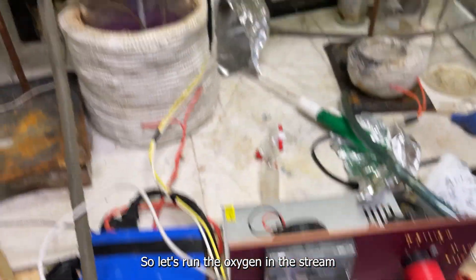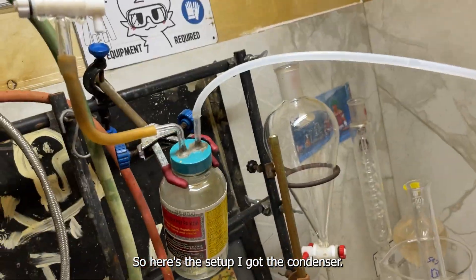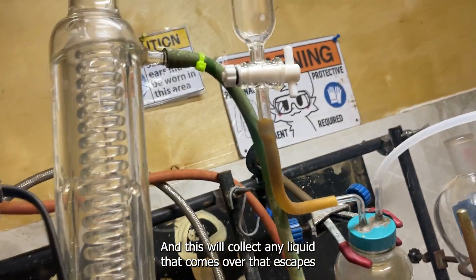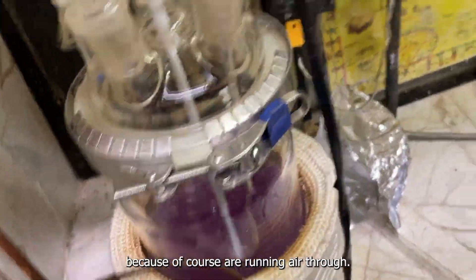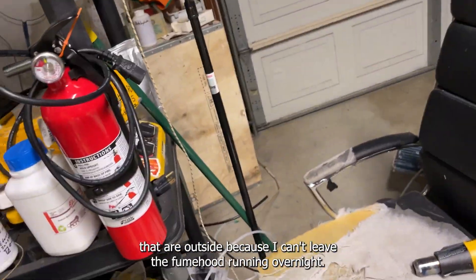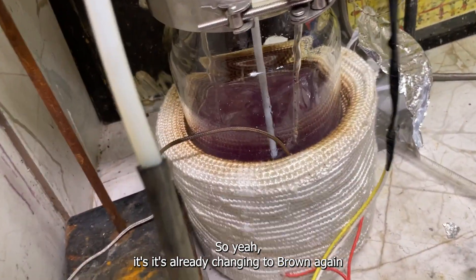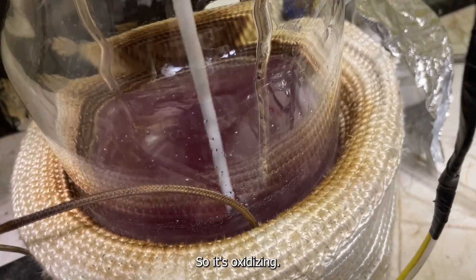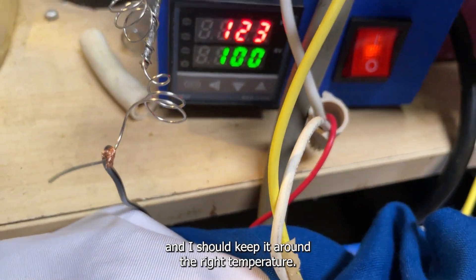Let's run the oxygen and stirring, and it will promptly start changing colors again. Here's the setup, I got the condenser, you can see acetone and there's already boiling. This will collect any liquid that comes over that escapes, because of course we're running air through so some of the vapor gets carried over. The tube just vents it outside because I can't leave the fume hood running overnight, I'm not allowed to. It's already changing to brown again once we start the oxygen. It's at 70 celsius so I've decreased this a bit more, and I should keep it around the right temperature.